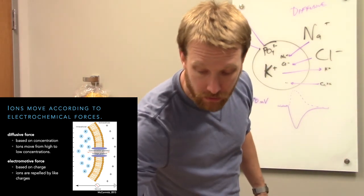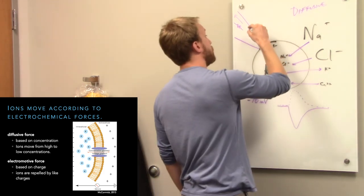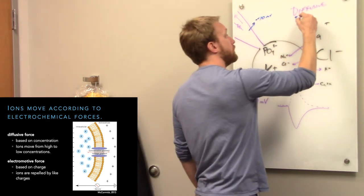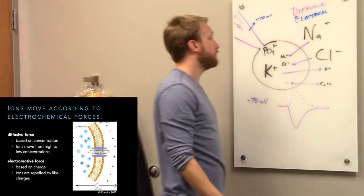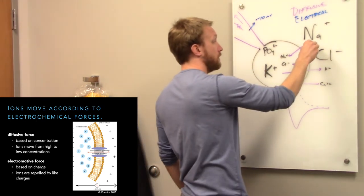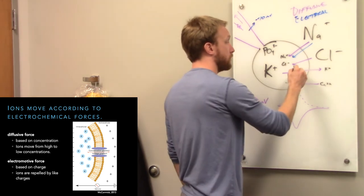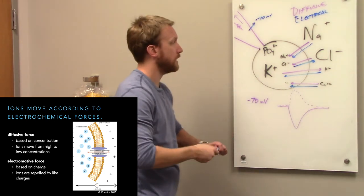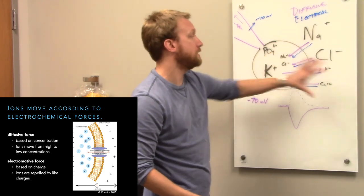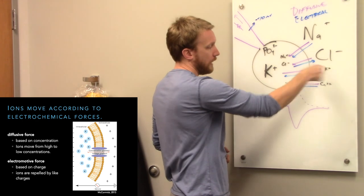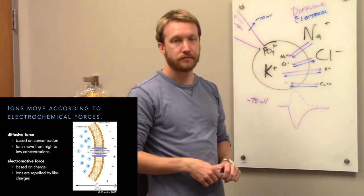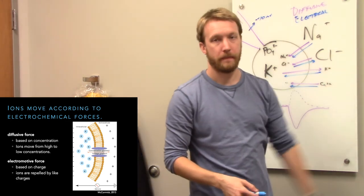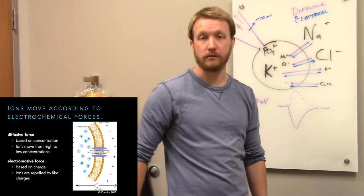Of course, these ions are charged, and so is the cell — measured at, say, negative 70 millivolts. The electromotive force, because the cell is negatively charged, pulls sodium in, pushes chloride out, pulls potassium in, and pulls calcium in. So in some cases we have agreement: sodium and calcium definitely want to enter the cell, with both forces agreeing. Chloride and potassium are a mixed bag. Chloride tends to move in at rest; potassium tends to move out at rest. We'll be able to predict this once we calculate their reversal potentials.